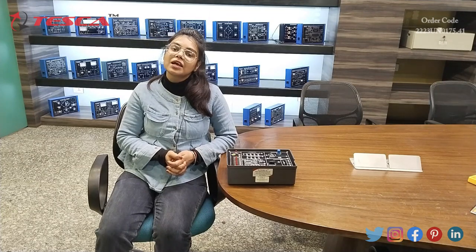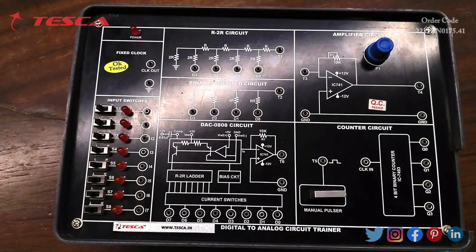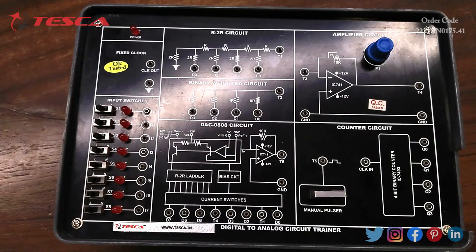Basically, digital to analog converter is used to convert the digital signal into the analog signal and it is used in telephone, music, etc. systems. Now I am going to give you an overview about this kit.